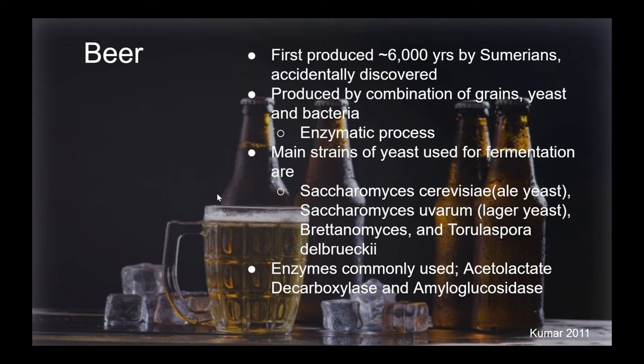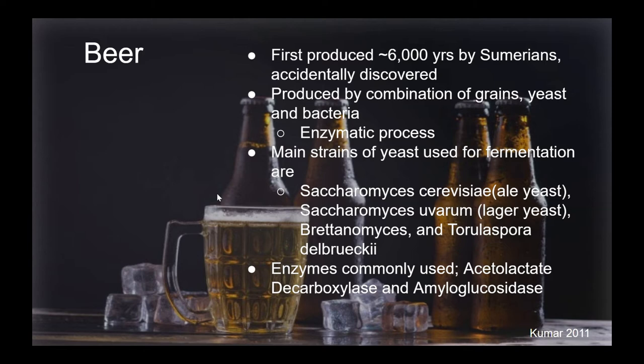The type of grain, yeast, and bacteria you use changes the flavor, color, and texture of the end result. For example, using Saccharomyces cerevisiae will create an ale, and using Saccharomyces uvarum will create a lager. Since this is an enzymatic process, common enzymes used are acetolactate decarboxylase and amyloglucosidase.